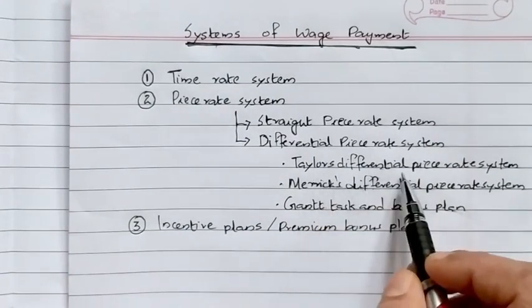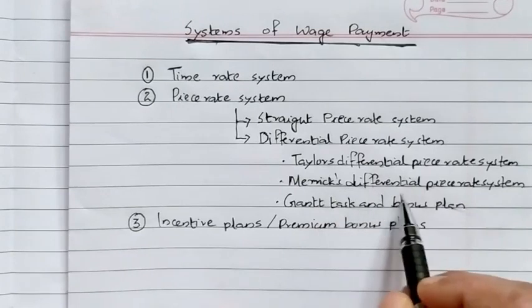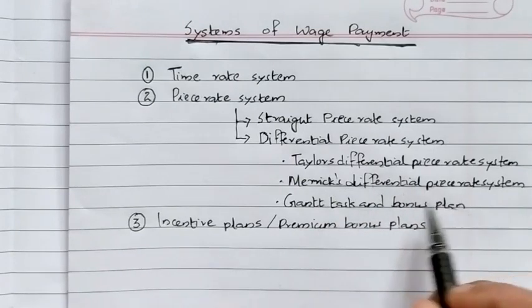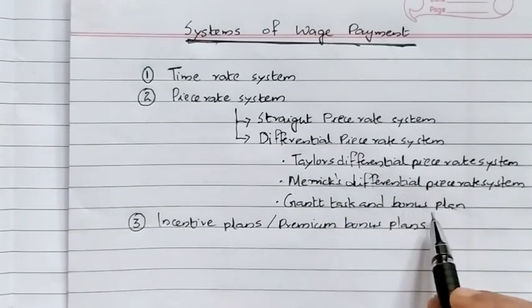Under Differential Piece Rate System, the first is Taylor's Differential Piece Rate System, the next is Merrick Differential Piece Rate System, and the third is Gantt's Bonus Plan.